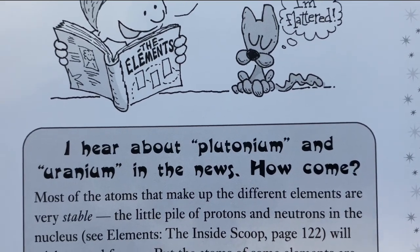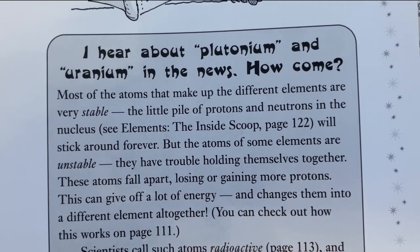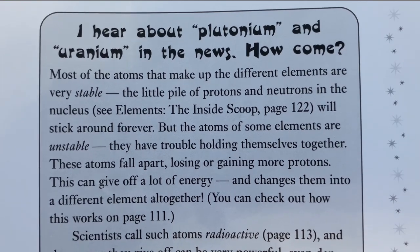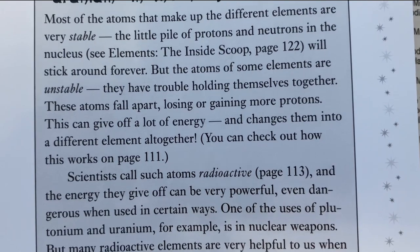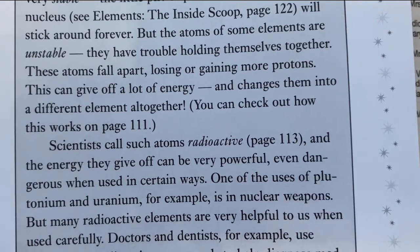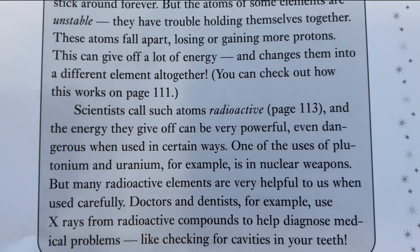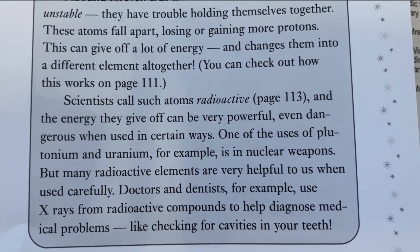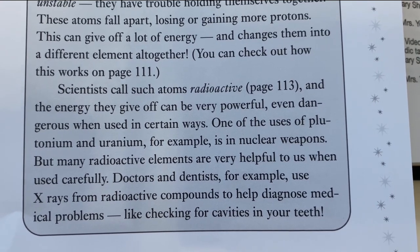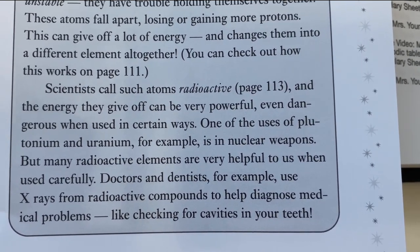Most of the atoms that make up the different elements are very stable — the protons and neutrons in the nucleus will stick around forever. But the atoms of some elements are unstable; they have trouble holding themselves together. These atoms fall apart, losing or gaining more protons. This can give off a lot of energy and changes them into a different element altogether. Scientists call such atoms radioactive, and the energy they give off can be very powerful — even dangerous. One use of plutonium and uranium is in nuclear weapons, but many radioactive elements are also very helpful — doctors and dentists use X-rays from radioactive compounds to diagnose medical problems like checking for cavities in your teeth.